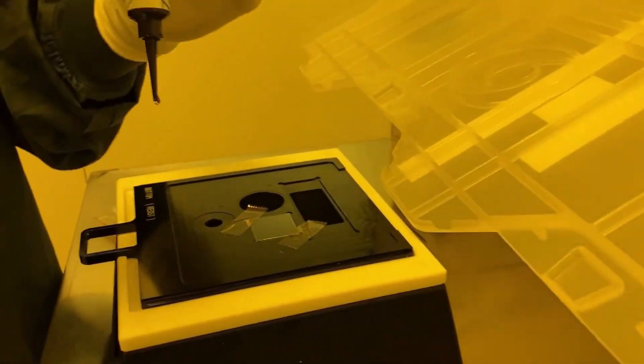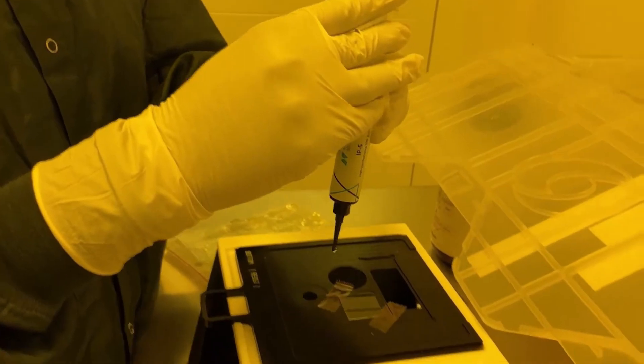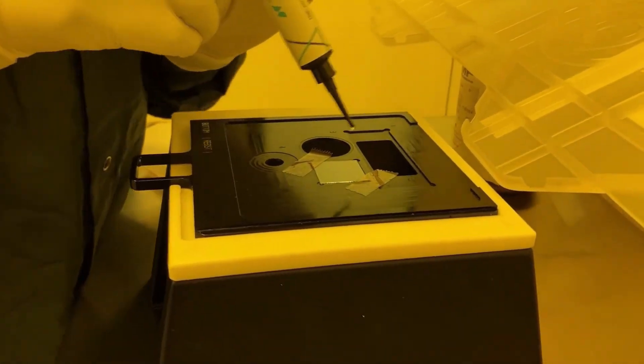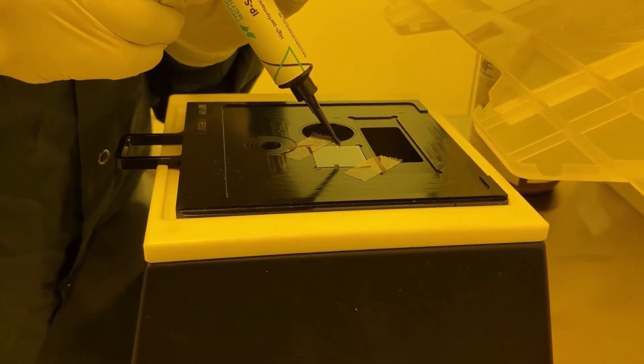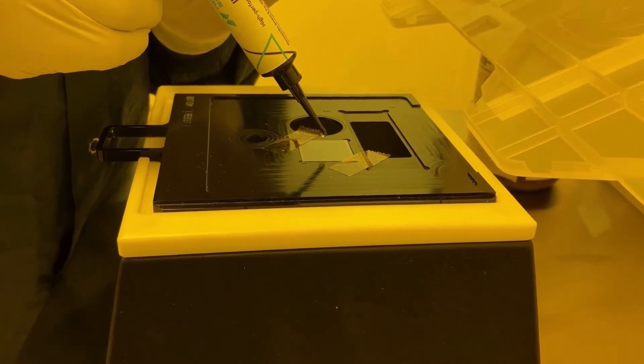Next, take the resist you will be using. In this case we are using IPS. Add a small drop onto your substrate. It does not take much as most prints are in the micro scale.